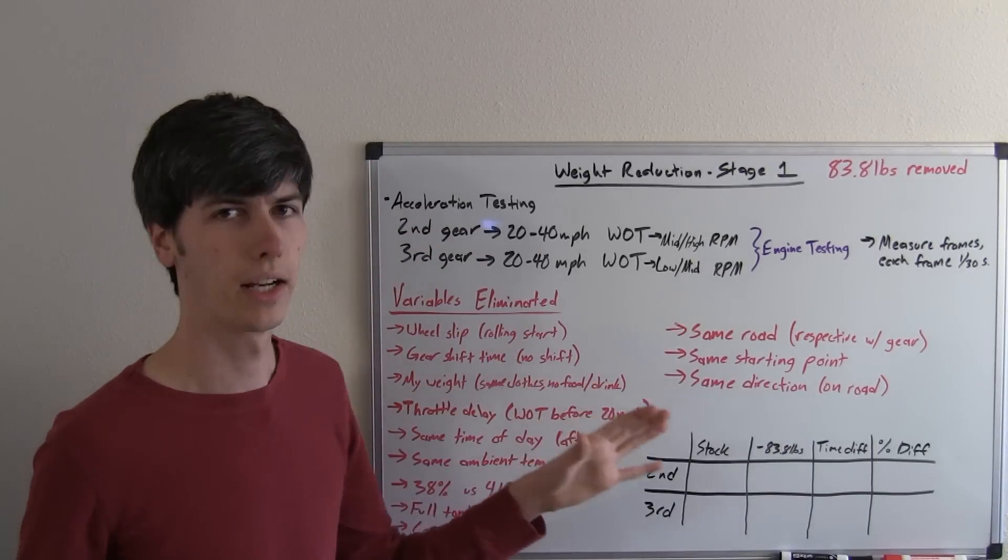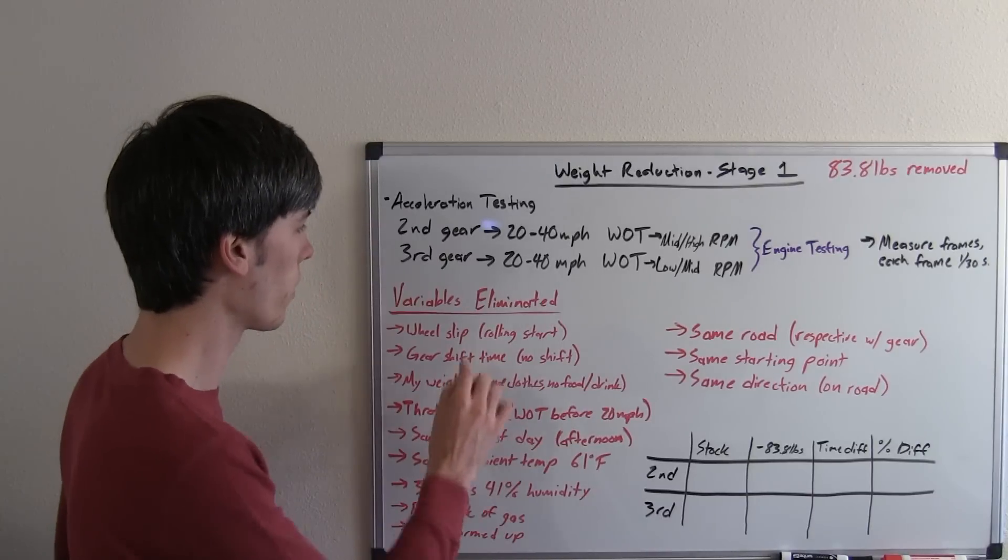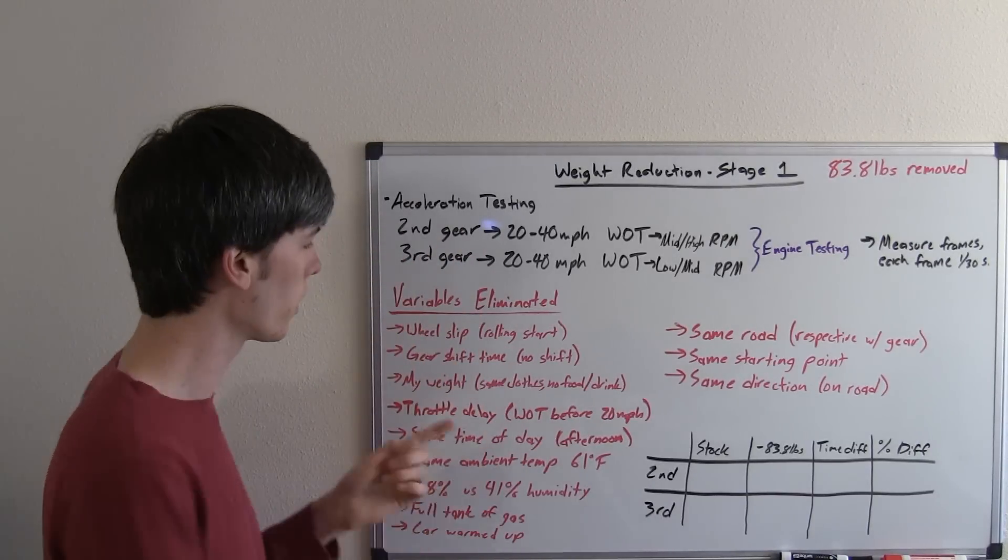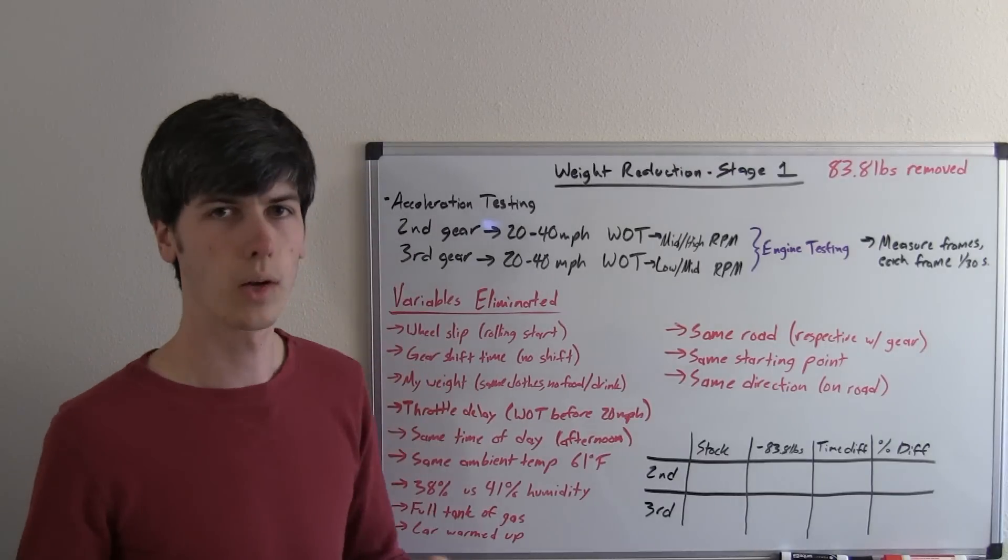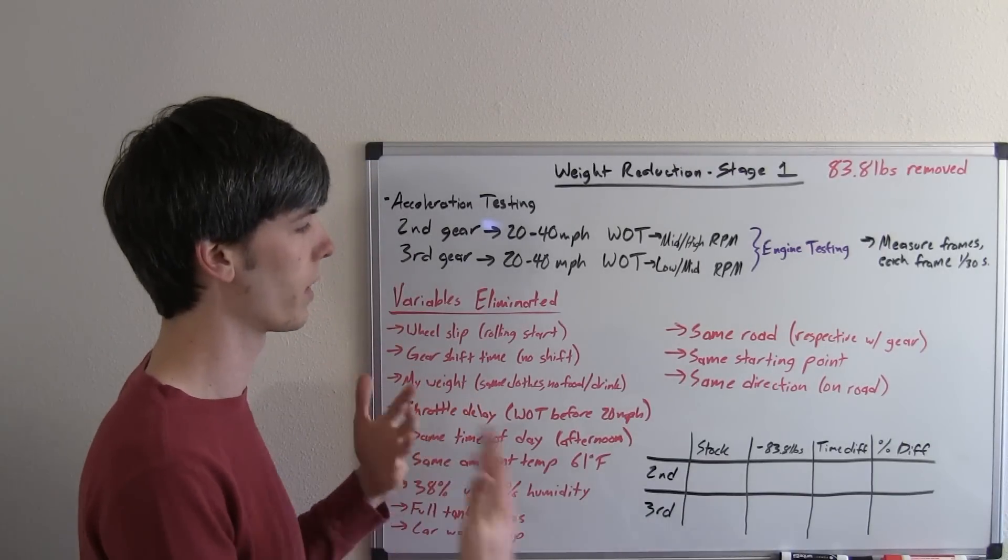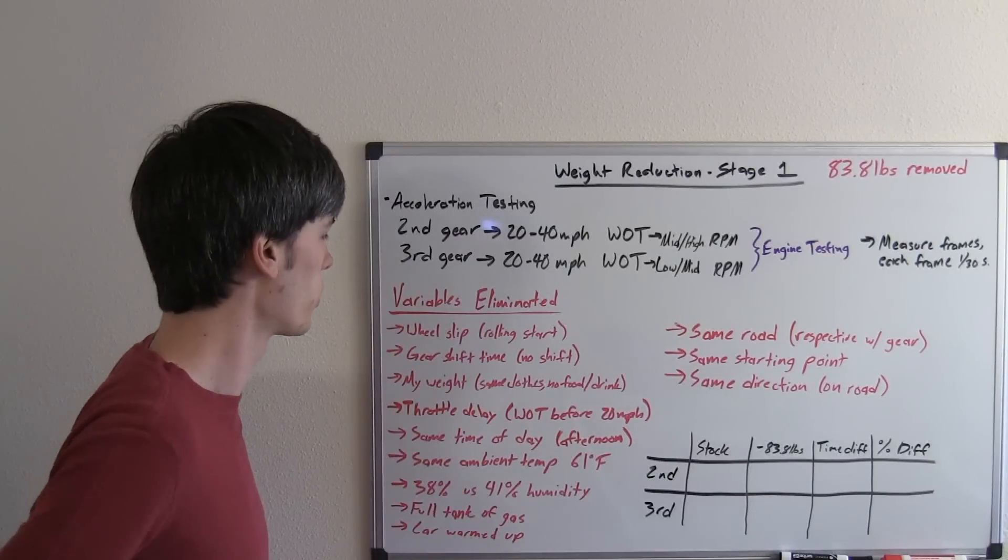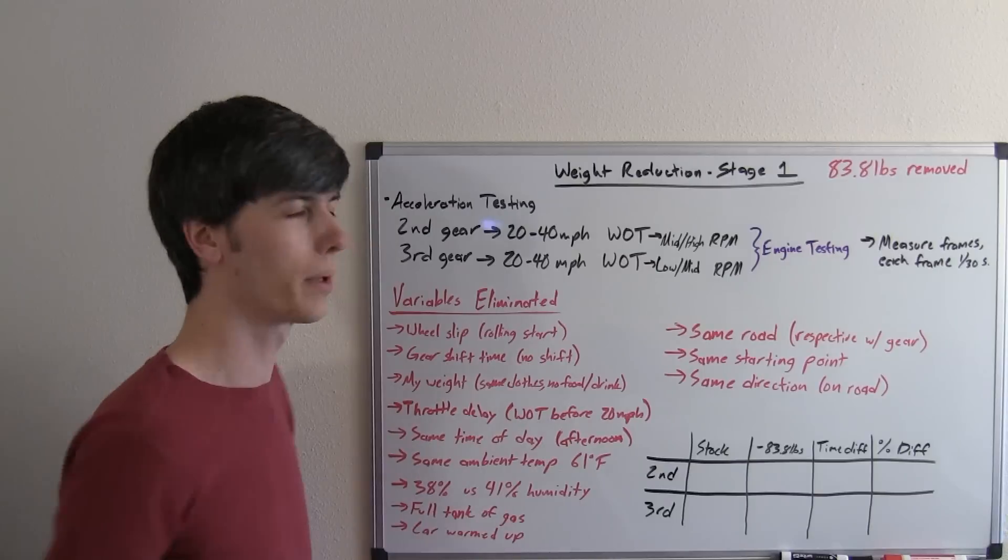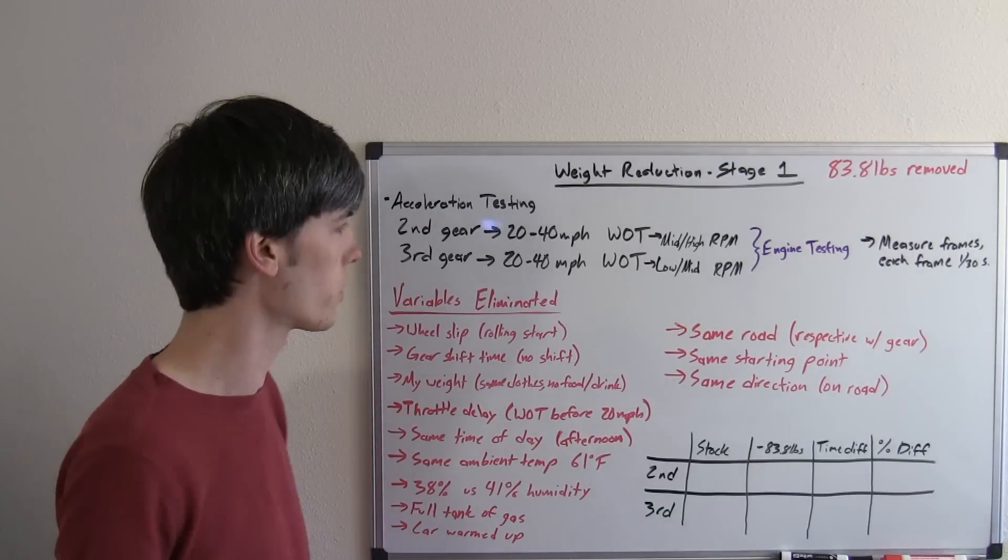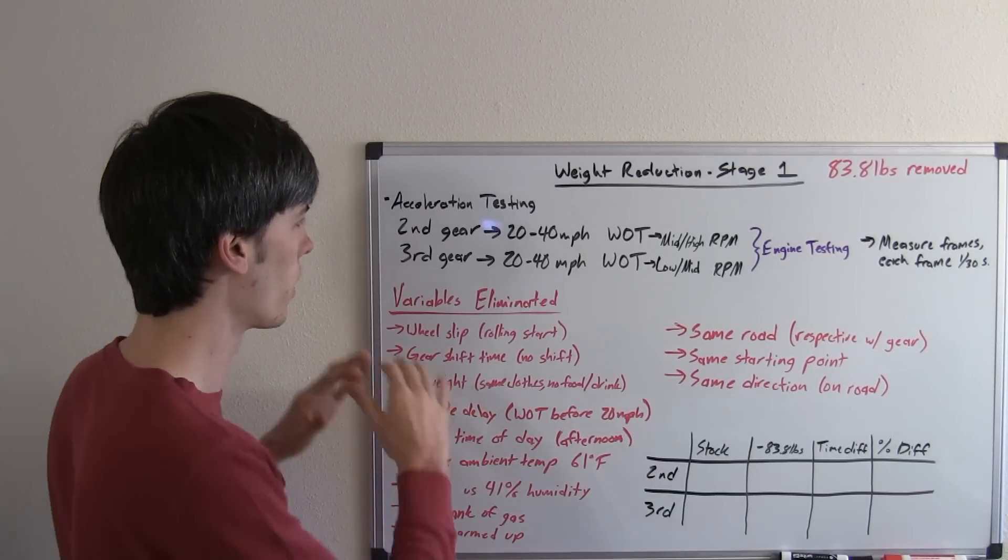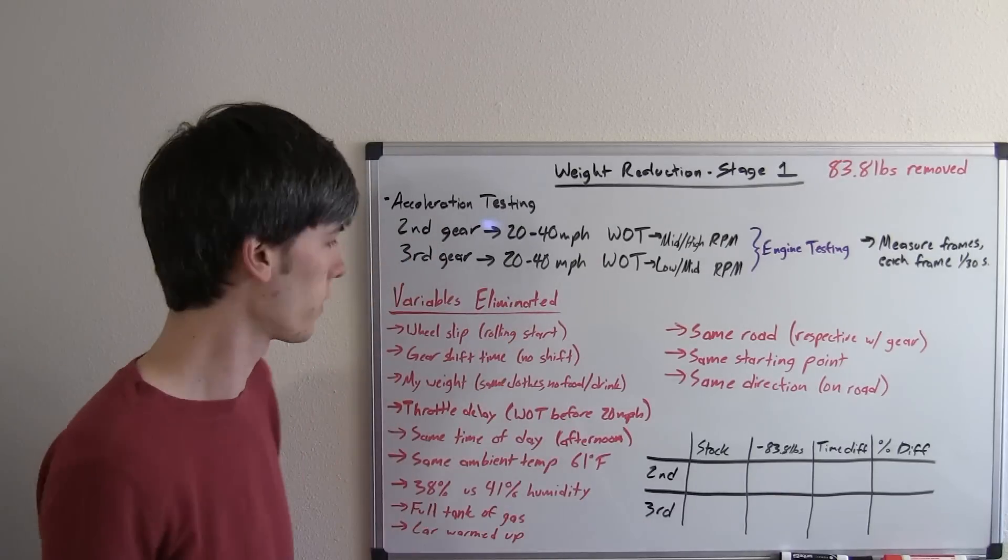So what variables have I eliminated in creating this test? Well, the reason I'm leaving it in a single gear and starting from a rolling start is to eliminate wheel slip. I don't want those tires spinning because that's going to change my time in acceleration. I don't want to shift gears because you can shift gears with a different duration and have some clutch slip in there and that's going to give you all kinds of different results. So I want to leave it in the same gear for the test.